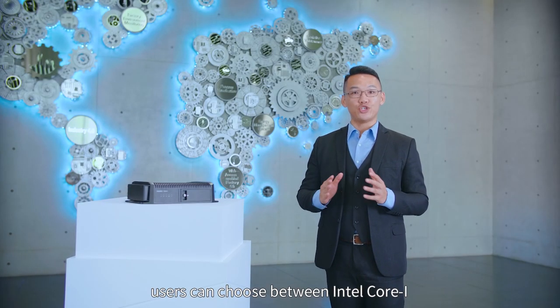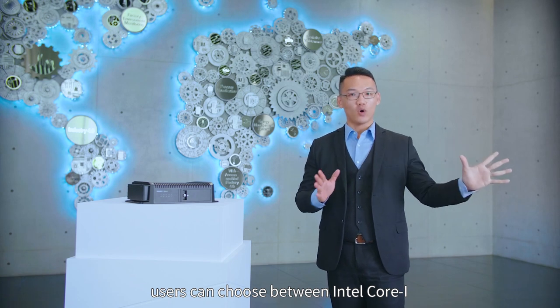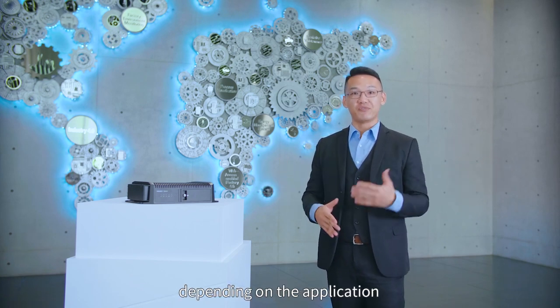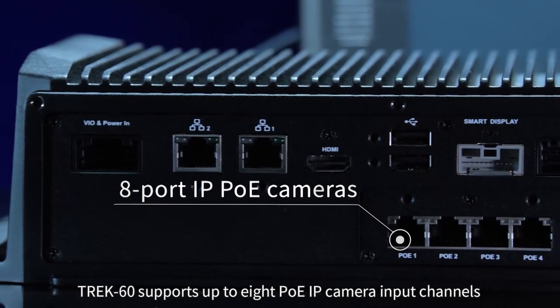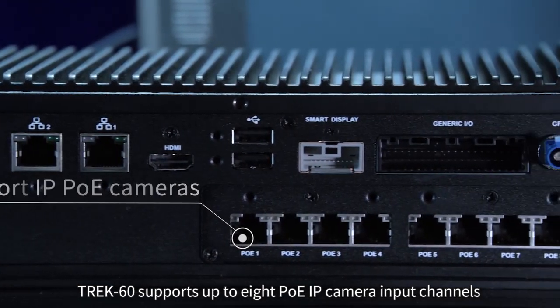Users can choose between Intel Core-i or ATOM processor, depending on their application. Track60 supports up to 8 PoE IP camera input channels.